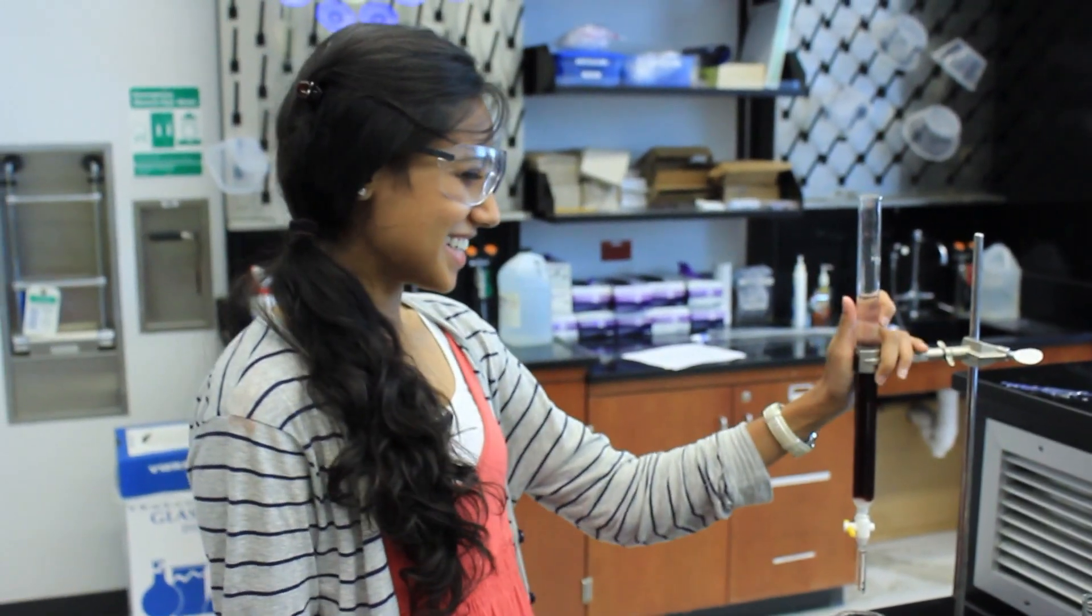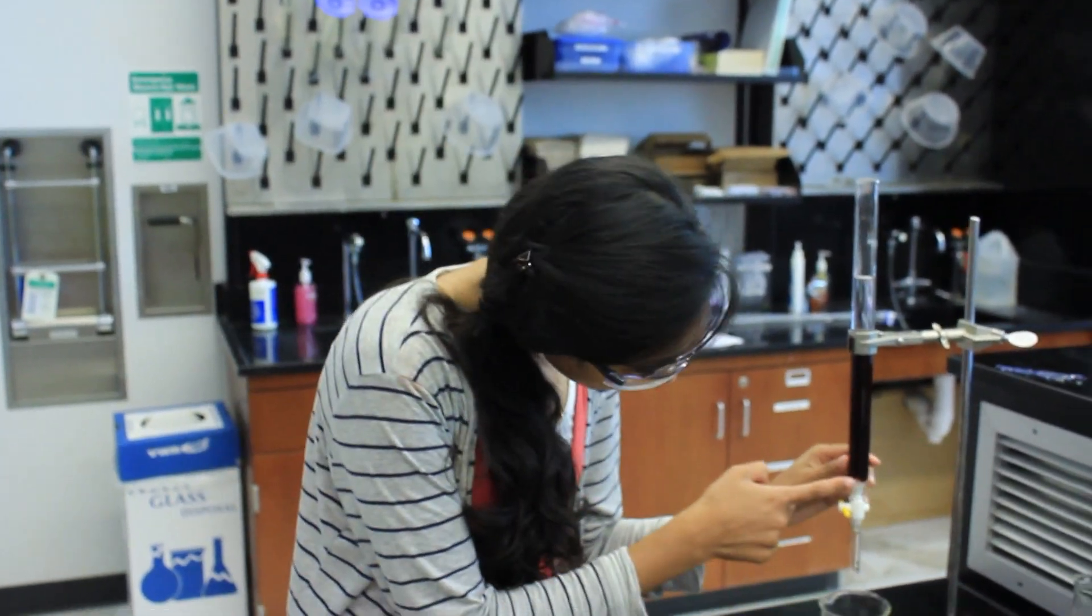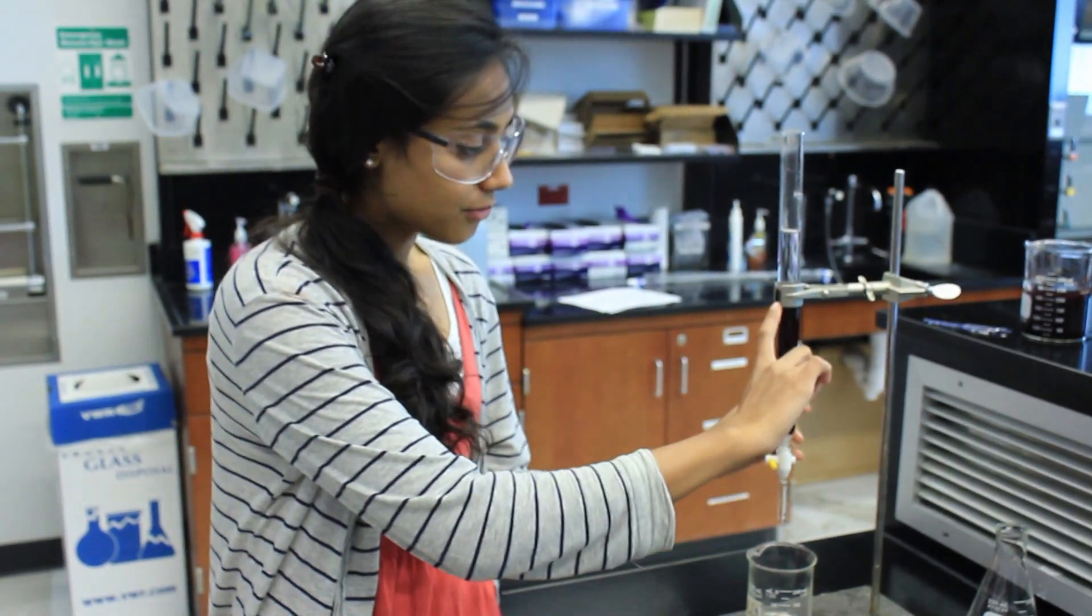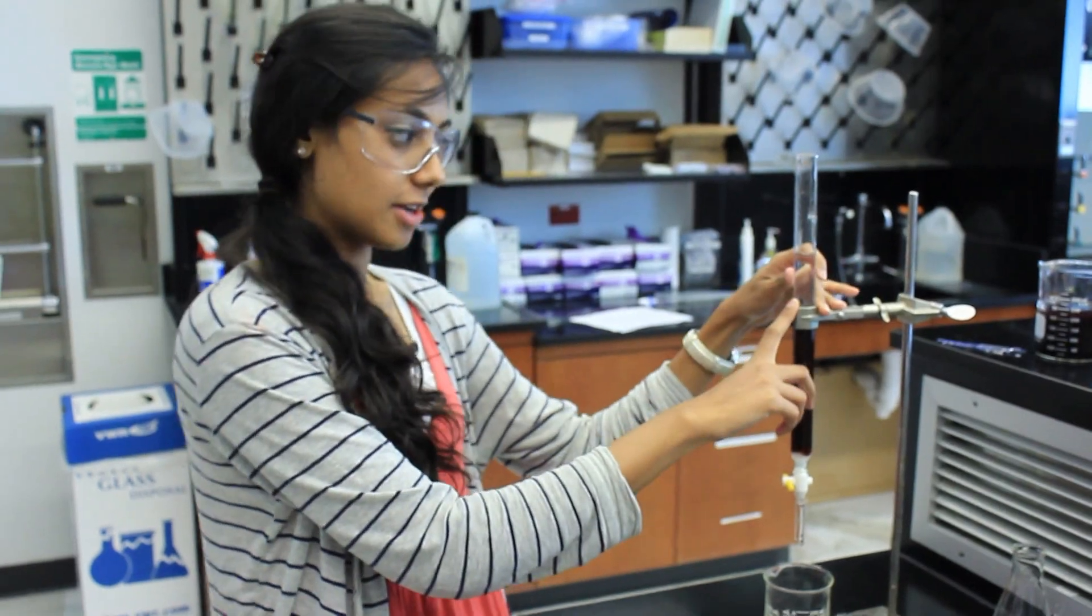Now you have to set up your ion exchange. First you need a column and a stopcock. In the stopcock there's at least 2 centimeters of cotton at the very bottom. And right here is your resin slurry, which your TA will most likely pour into your column for you.